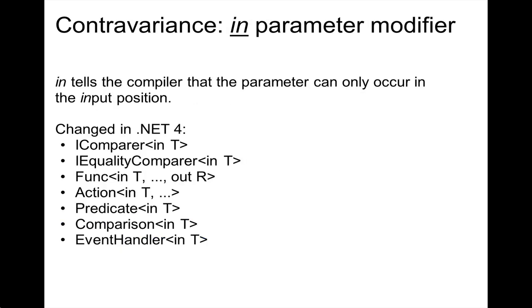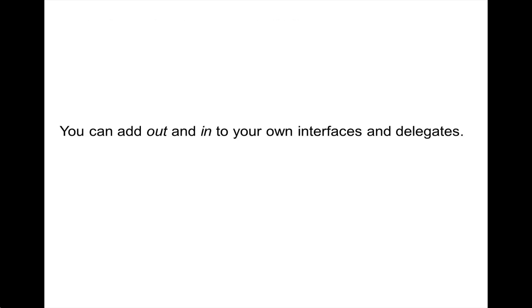For contravariance, you use the `in` parameter modifier. `in` tells the compiler that the parameter can only occur in the input position. Here's a list of interfaces and delegates that have been changed in .NET 4 to support contravariance. In Visual Studio you can see that they all have the `in` parameter modifier in front of them. The take-home lesson is that you can add the `out` and `in` parameter modifiers to your own interfaces and delegates to support covariance and contravariance.